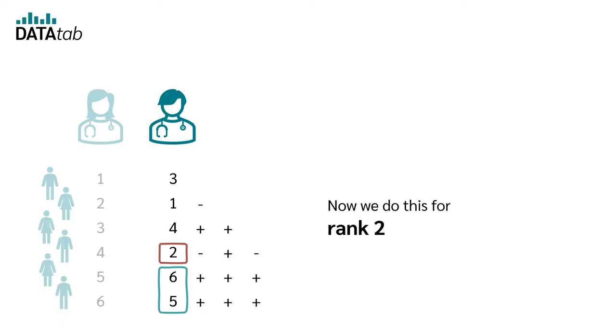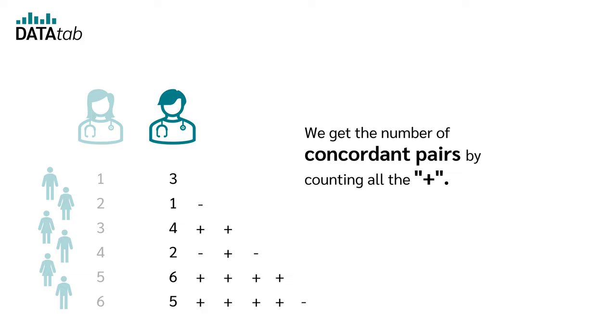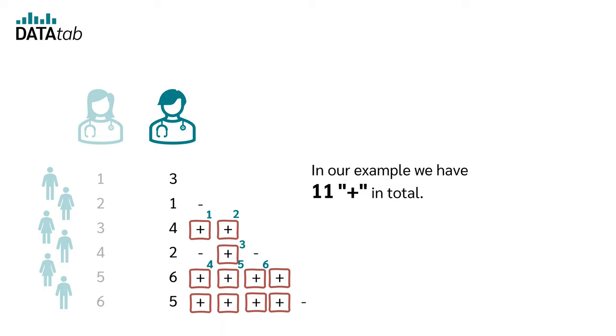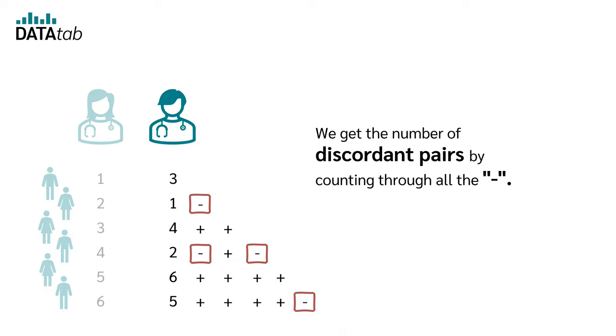Now we do this for rank two and rank six. Then we can easily calculate the number of concordant and discordant pairs. We get the number of concordant pairs by counting all the plus. In our example we have a total of